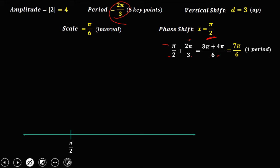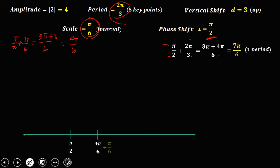We now have the first key point at π/2. Adding the interval π/6 each time: the second point is π/2 plus π/6 — LCD is 6, giving 3π plus π equals 4π/6. The third point is 5π/6, then 6π/6, and the fifth point is 7π/6. That confirms 1 period equals 5 key points: 1, 2, 3, 4, 5.